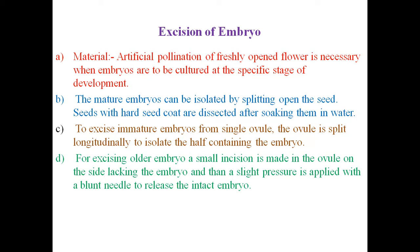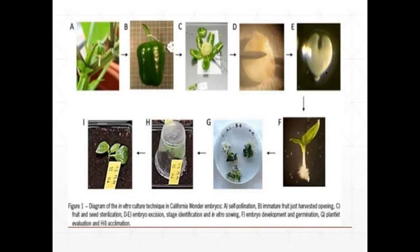To excise an immature embryo from a single ovule, the ovule is split longitudinally to isolate the half containing the embryo. For older embryos, a small incision is made in the ovule on the side lacking the embryo, and then a slight pressure is applied with a blunt needle to release the intact embryo. After pollination, the immature fruit is harvested; the fruit and seed are opened, and after fertilization, embryos are excised.